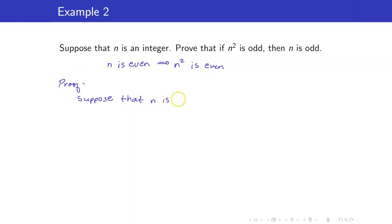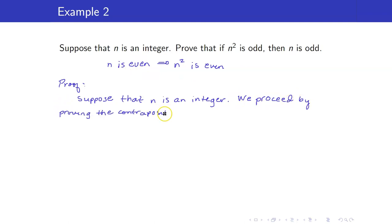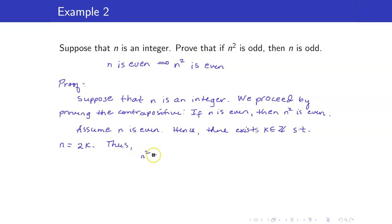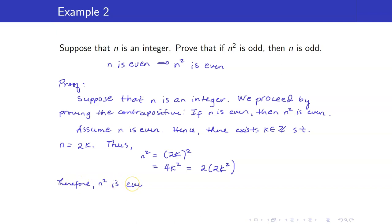Start with our hypothesis: N is an integer. And then guide the reader that you will proceed by contrapositive — we proceed by proving the contrapositive. If N is even, then N squared is even. We are assuming that N is even. Hence, there exists an integer K such that N is equal to 2K. Thus, N squared is equal to the square of 2K, which is equal to 4K squared, which is equal to 2 times 2K squared. Therefore, N squared is even.